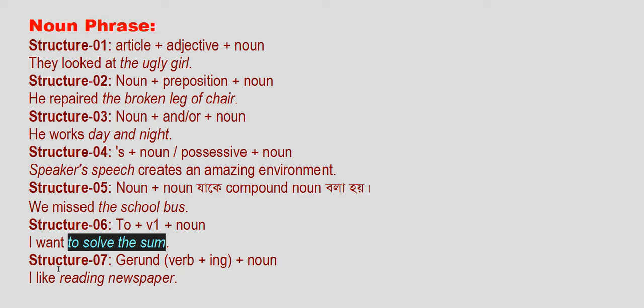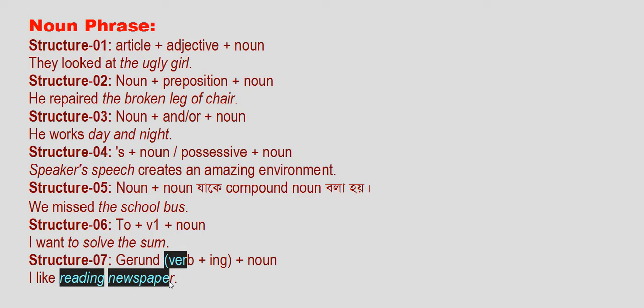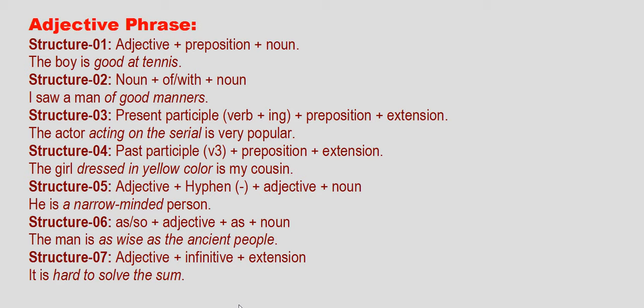The structure is number 7, where the structure is very important. How many nouns can you say? Like: reading newspaper, a reading English newspaper, cooking rice, reading newspaper. If you have a noun, you will form a noun phrase with a certain structure. The structure will show you how to arrange the noun correctly.